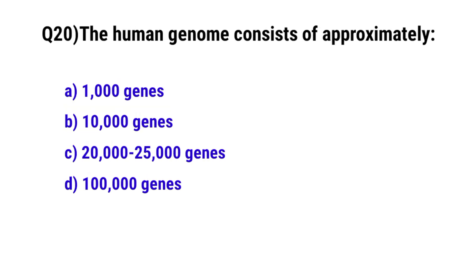Question No. 20: The human genome consists of approximately? The correct option is C: 20,000 to 25,000 genes.